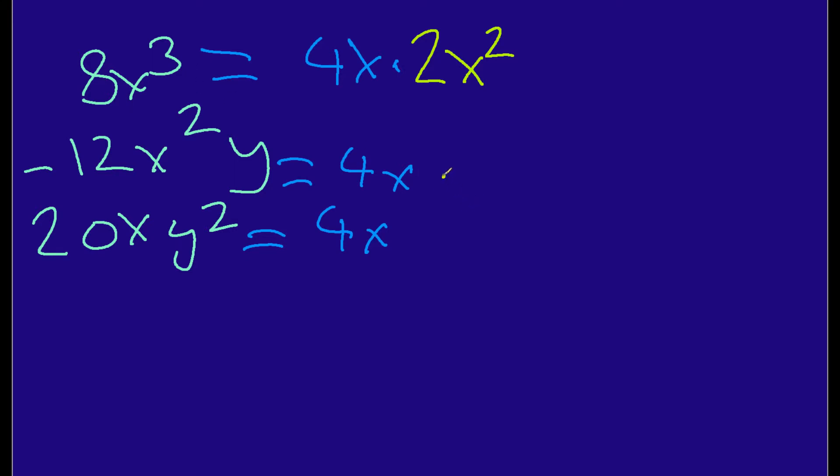Now, for the 2nd one, technically, this is a negative 4x. To get a negative 12x squared y, I just have to multiply by negative 3xy. If I multiply these two together, 4x times negative 3xy, I will get negative 12x squared y. And then, for the last one, if I multiply it by 5y squared, I will get 20xy squared.